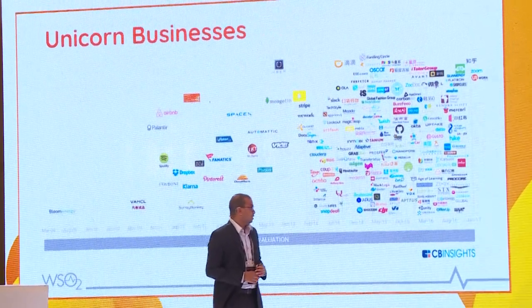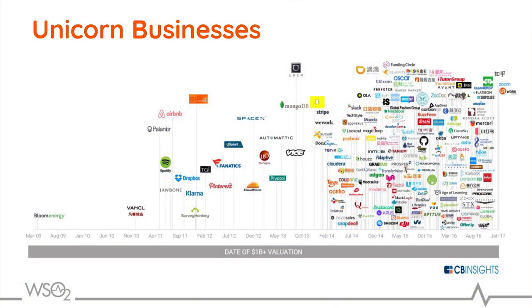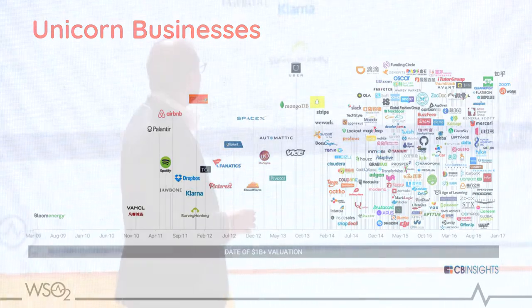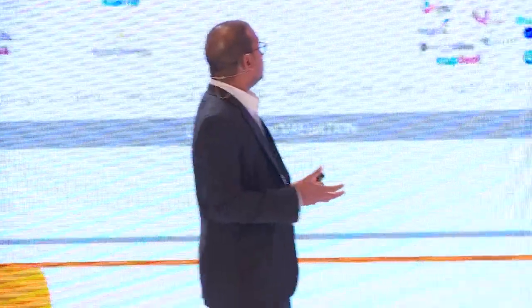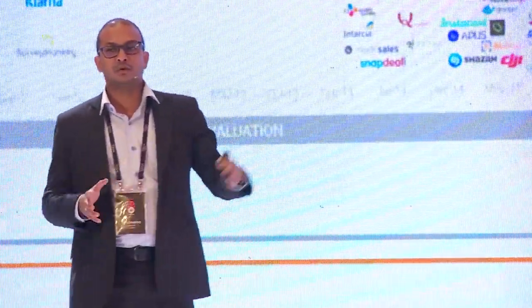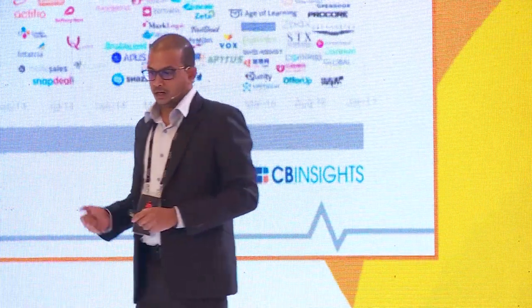Looking at the pipeline of unicorn businesses — from 2009 to 2013 we didn't see many unicorns, but after 2013 to 2017 there was a huge explosion, mostly platform-driven businesses. Businesses like Stripe, GitHub, and Lyft are all platform businesses. This trend will continue — we'll see more and more business platforms becoming unicorns at a very fast pace. The founding company of Pokemon Go became a unicorn company within a month. That's how fast you can grow your business using a business platform.